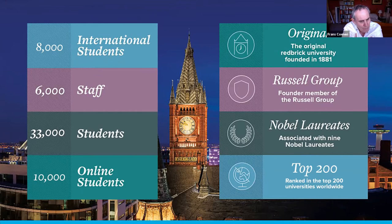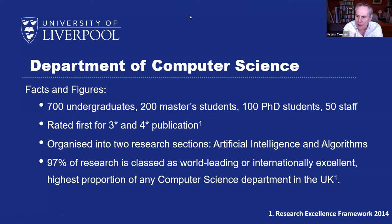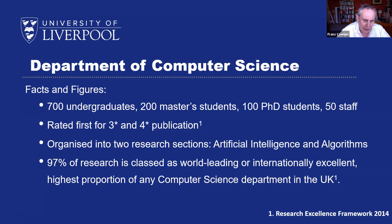We're very pleased with our number of Nobel Laureates and are top 200 in the rankings. The department has been in existence since the 1980s — computer science is quite a modern subject compared to many others taught at universities. The department comprises some 700 undergraduates, 200 master's students, 100 PhD students, and 50 academic staff plus support and technical staff. The high ratio of PhD students is an indication of our research strengths. We were rated first for our publications in a recent assessment exercise.